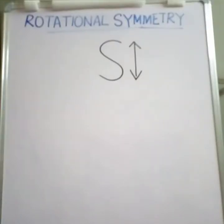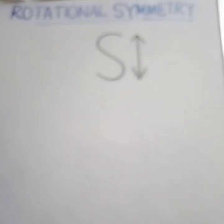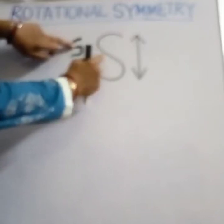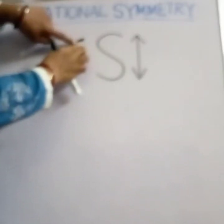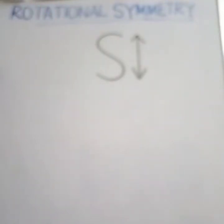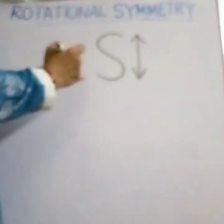So Z or S if rotated will look alike in two positions. This means they have rotational symmetry of order 2. Two times the figure has come back to its original position during one complete rotation.